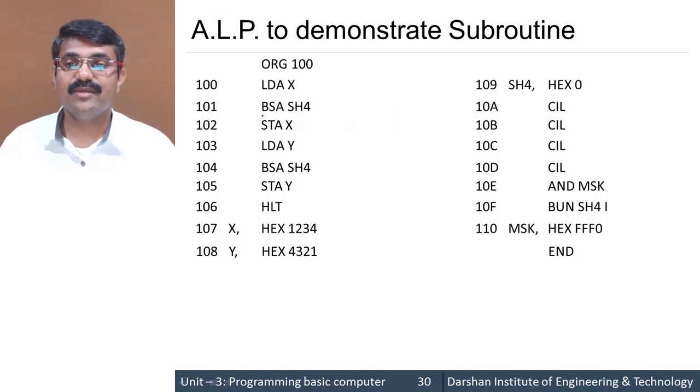The BSA instruction jumps to the address SH4, but before jumping it saves the return address at SH4. At address location 109, it will save the return address. The return address is 102, so 102 is saved at location 109. When we jump to the subroutine, the return address is stored here.